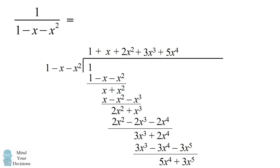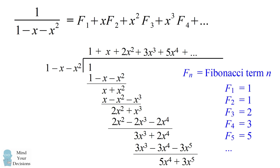And now we're seeing a pattern in the coefficients of this polynomial. If we write F_n as the n-th Fibonacci term, we have 1 divided by this polynomial will be F_1 plus xF_2 plus x²F_3 plus x³F_4 and so on. Each new power of x will be associated with the next term of the Fibonacci sequence.